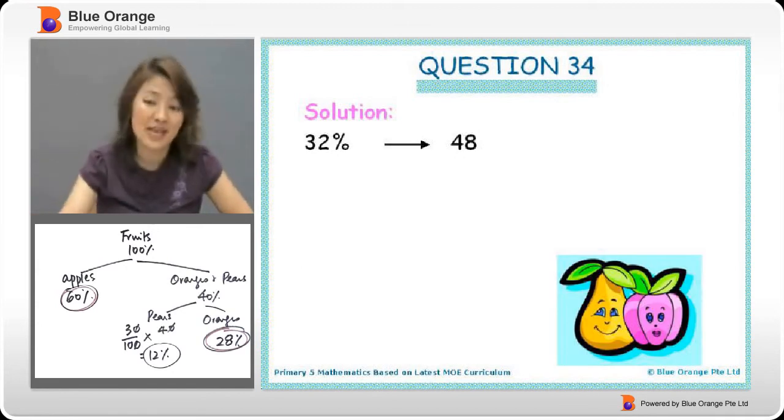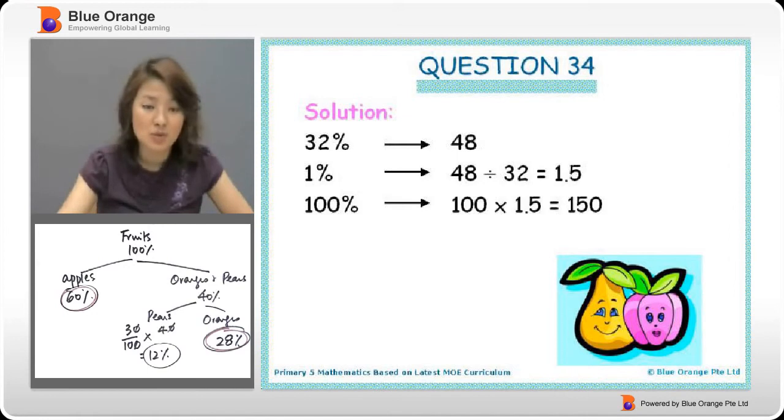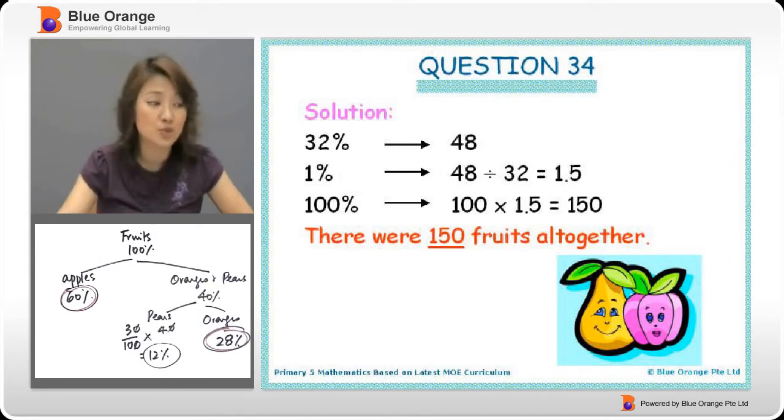32% represents 48 items. So our job is to find what is 100%. So there were 150 fruits altogether.